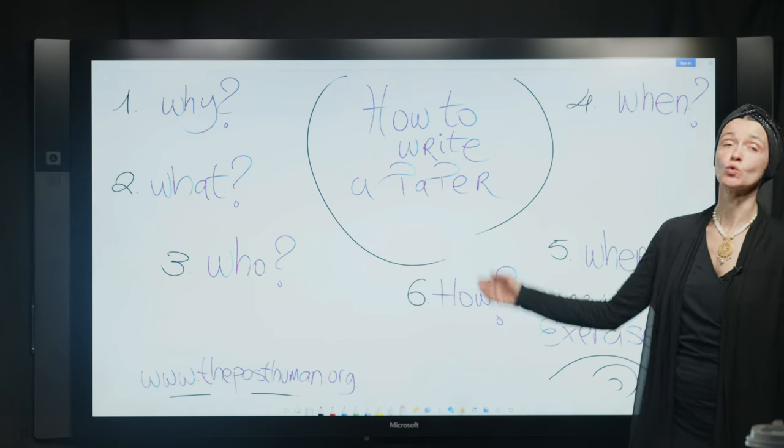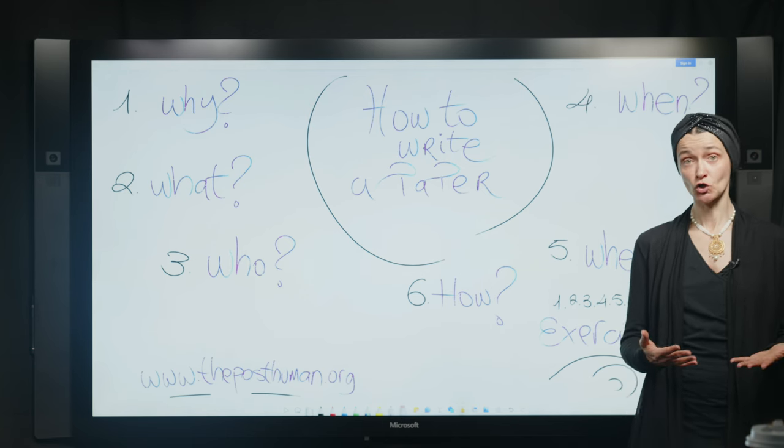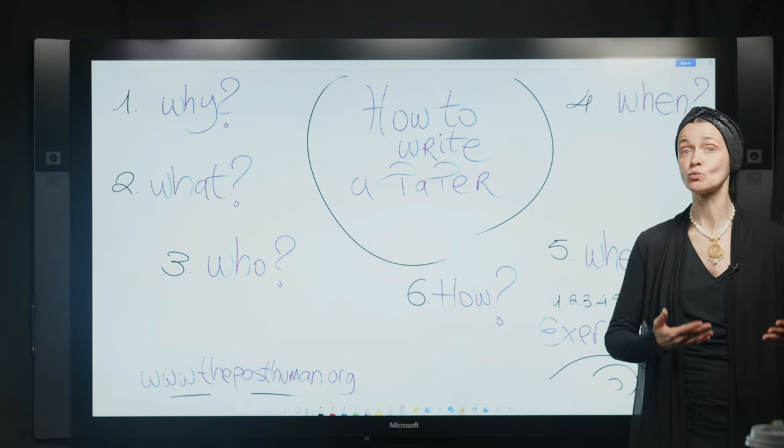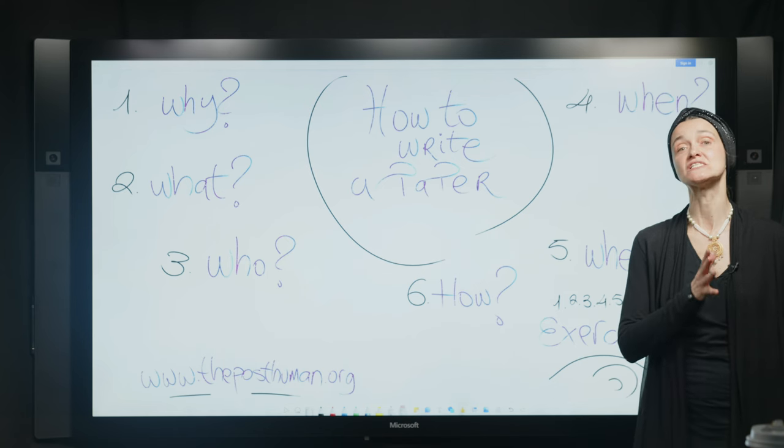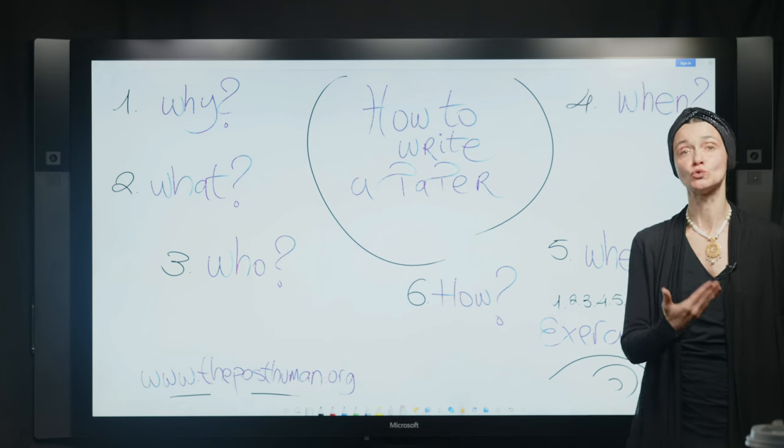The third one is who. Who is your audience? This is fundamental because in any type of writing, writing is not a monologue. This is not a private diary that you're writing. You are in dialogue with someone. Who is this someone? Make sure that this is very clear so that you will know what is the kind of tone that you need to write the paper.